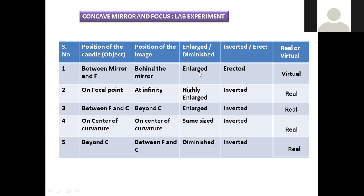From the extended observations table: when the candle is placed between the mirror and the focus, the position of the image is behind the mirror. With respect to the object, the image is still larger — an enlarged image — and it is erect. The image is virtual, meaning it is not a real image but resembles one. These are the inferences when the candle is placed between the mirror and the focus.